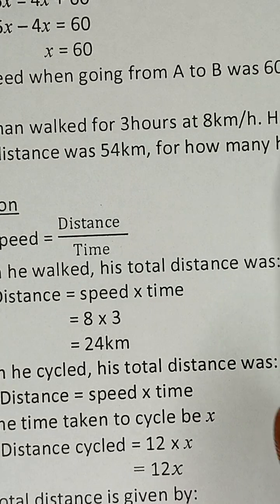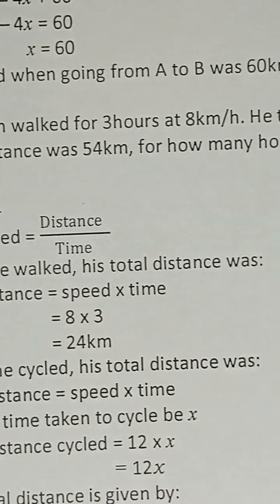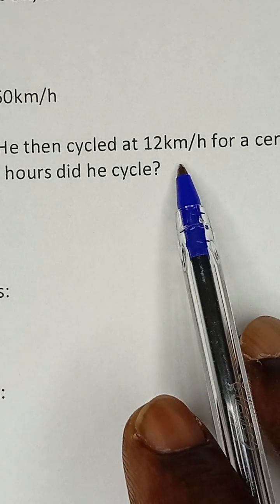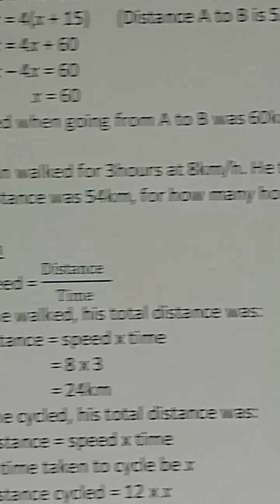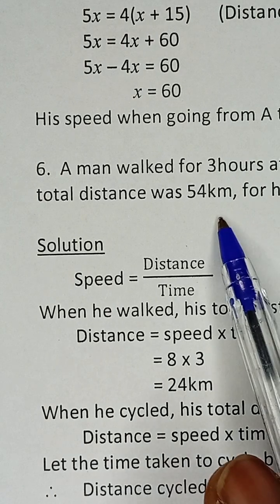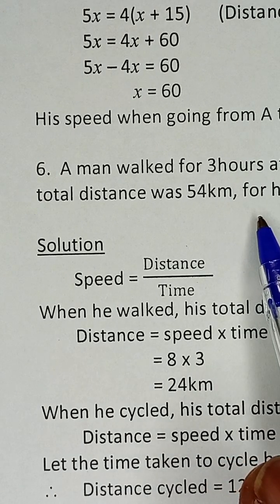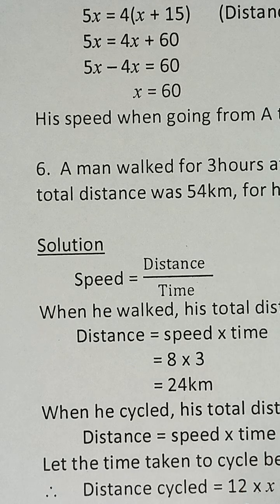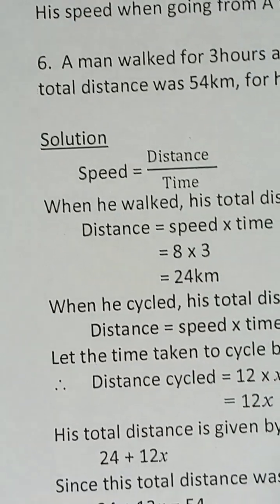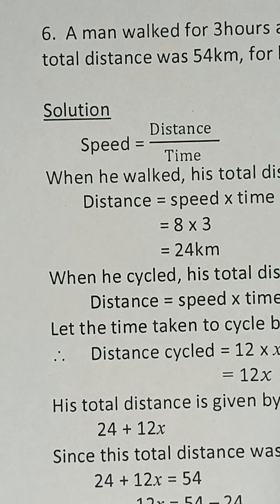So we are told that a man walks for three hours at 8 km/h and he cycled for a period of time at 12 km/h. If his total distance is 54 km, we need to find the time in which he cycled. This is a question on speed, distance, and time.